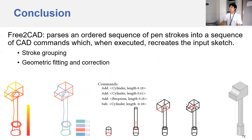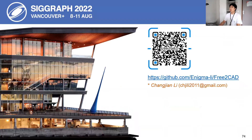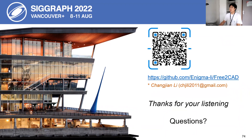To conclude, we have proposed Free2Cat that parses an ordered sequence of pen strokes into a sequence of CAD commands which, when executed, recreates the input sketch. We have cast our problem into a grouping task, and the geometric correction step significantly improved the accuracy. The code and data are available now — please feel free to try it. Thanks for listening. I am happy to take questions.